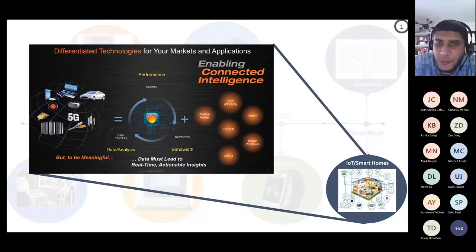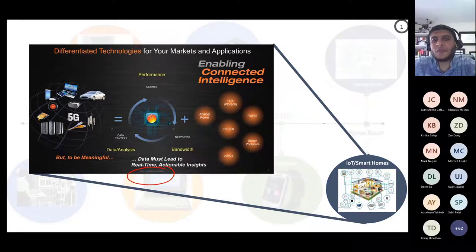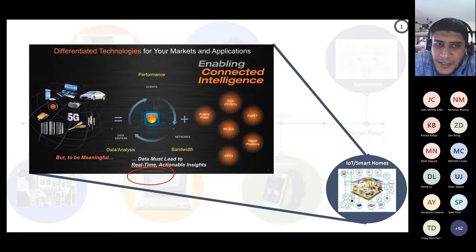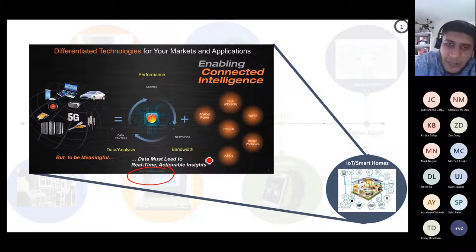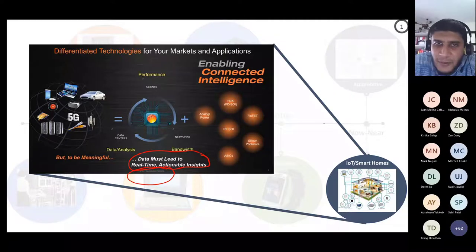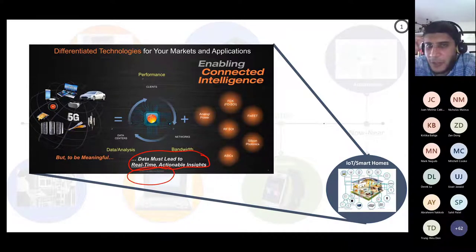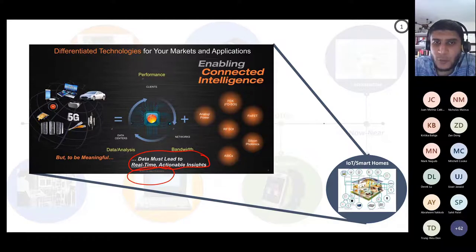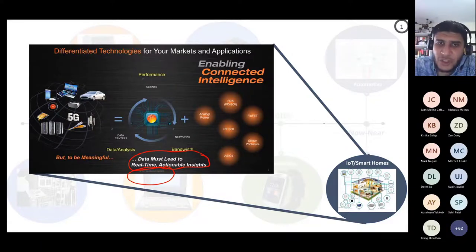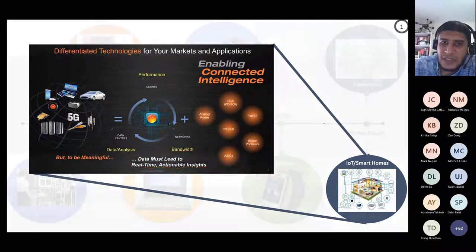For IoT, Global Foundries — which manufactures wafers similar to TSMC and Intel — says that for IoT systems you do a lot of data analysis, bandwidth is very important, and you have real-time actionable insights. For example, if there is a security alert or smoke detected in your house, you need to take action, and this action has to happen in real-time; otherwise a fire might come to the house. Those actionable insights that must happen in real-time put a constraint on the system that did not exist before — that is the predictability side of things.